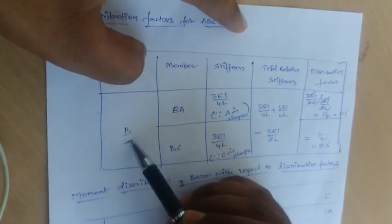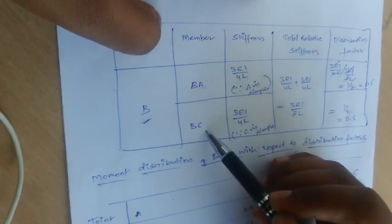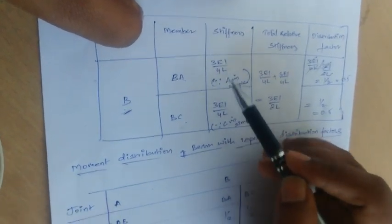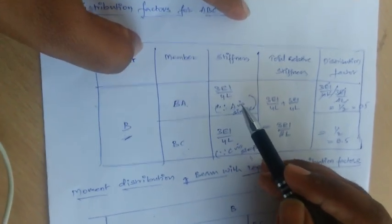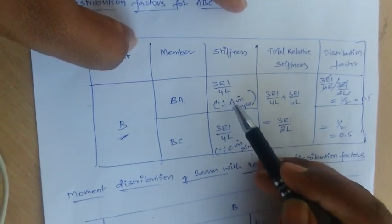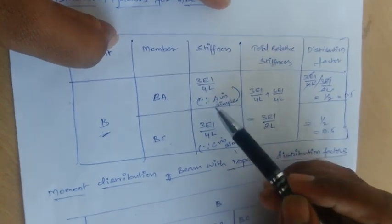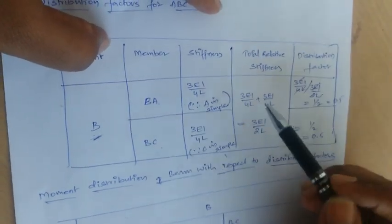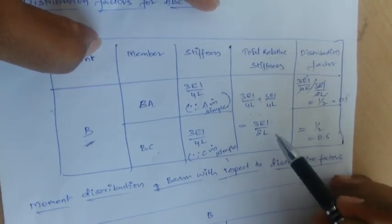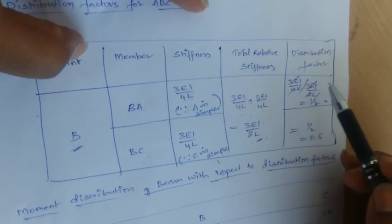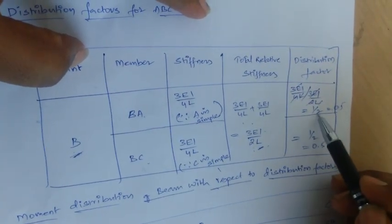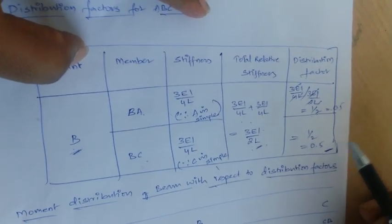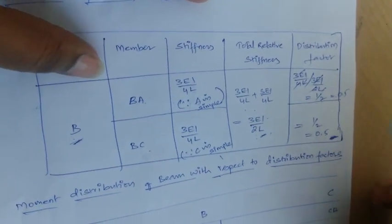The distribution factor for each member at joint B is (3EI/4L) divided by (3EI/2L), which equals 1/2. Since both members B-A and B-C have the same stiffness, each has a distribution factor of 1/2.